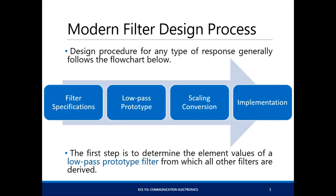Your modern filter design procedure is outlined quite simply in this flowchart as you see here. First, you get the filter specification. From the filter specification, you'll get the filter order. From the filter order, you have your low-pass prototype. The low-pass prototype you upscale in frequency and impedance, and from there you now implement it. Quite simply.